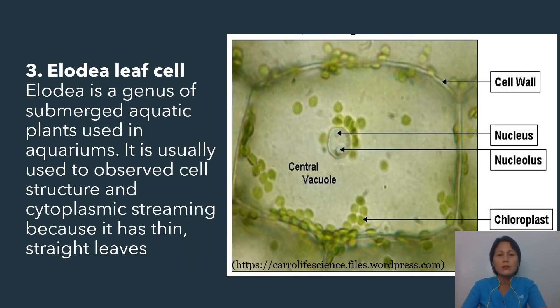We also have the elodea leaf cell. Elodea is a genus of submerged aquatic plants used in aquariums. It is usually used to observe cell structure and cytoplasmic streaming because it has thin, straight leaves.